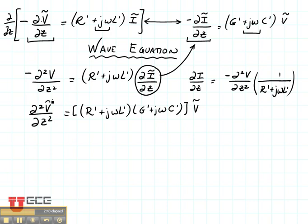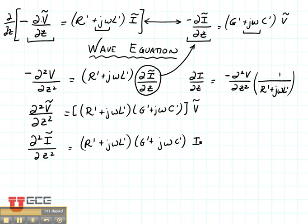And what do you suppose would have happened if we had done it the opposite way, where we took the derivative of the current equation and substituted it back into v? The other term that we would have gotten is the second derivative of the current is equal to r' plus j omega l' times g' plus j omega c' times i.